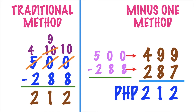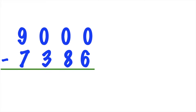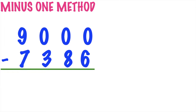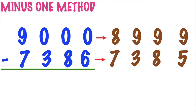Again, in subtraction with zero difficulty, we have 2 strategies: the first one is the traditional method, and the second one is the minus-1 method. So let's have another example. I have here 9,000 minus 7,386. Let's use the minus-1 method. So 9,000 will become 8,999 because we subtract 1 from 9,000.